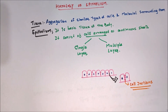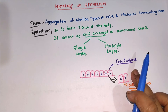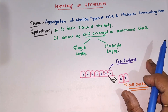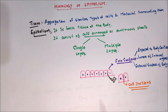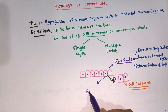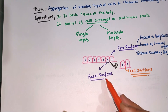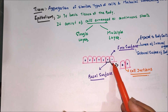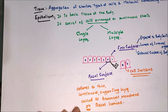Another surface of the epithelium is the free surface. This free surface is exposed to the body cavities, and it is also present at the lumen of internal organs and at the external surface of the body. Another surface of the epithelium is the basal surface, which adheres to a thin continuous supporting layer called the basement membrane, also known as the basal lamina.